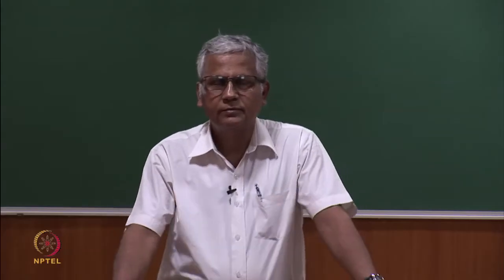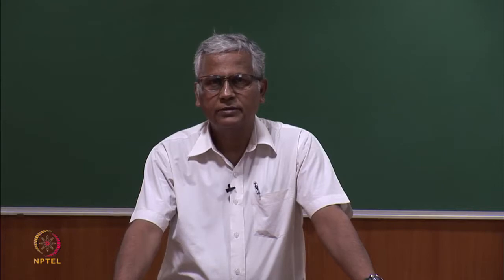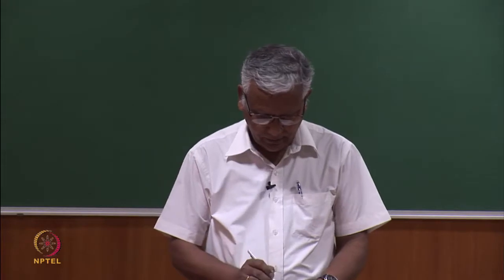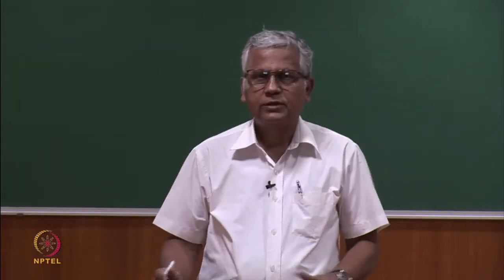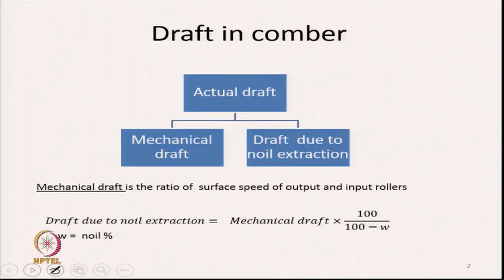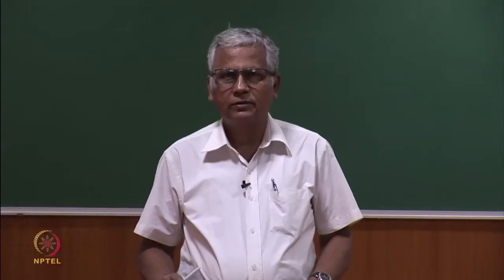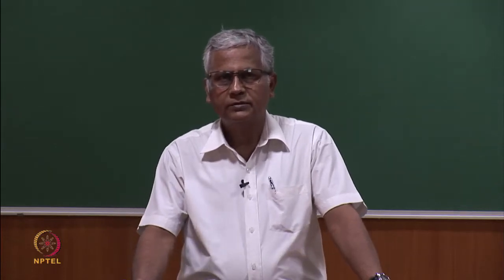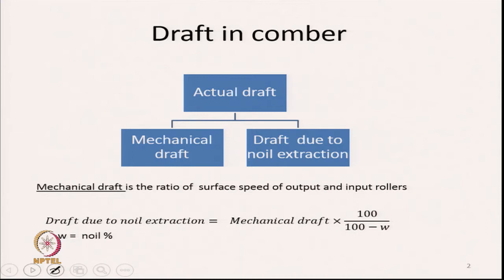Today we are going to discuss calculation of process and performance parameters of the combing machine. We will start with draft. In the case of the Comber, the actual draft has two components: one is the mechanical draft and the other is the draft due to noil extraction.